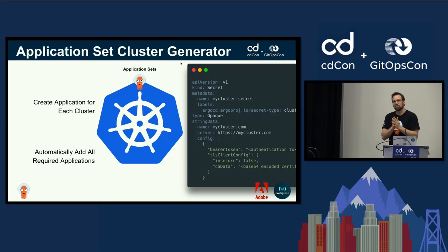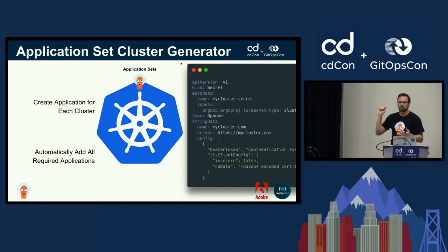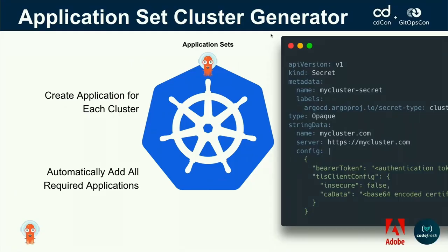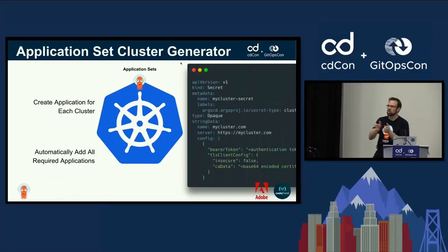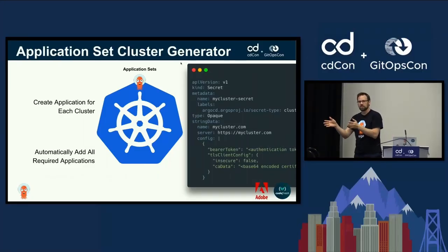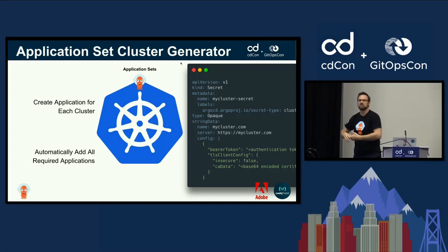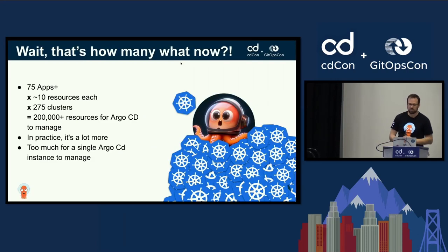The one we're going to leverage for Adobe is the cluster generator. Adding a cluster to Argo CD is as simple as creating a secret — it's declarative. I can create a secret on my cluster where Argo CD lives, leveraging a secrets manager, external secrets, whatever. For each cluster I add, I can generate my applications. Every time I add a cluster, I want Prometheus added, Grafana added — with a specific policy. That's very possible and important for this strategy.